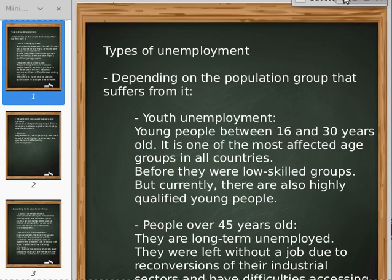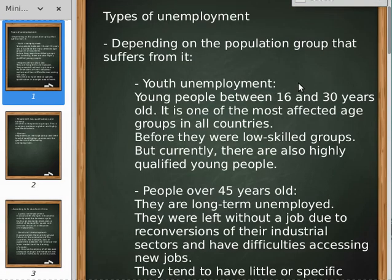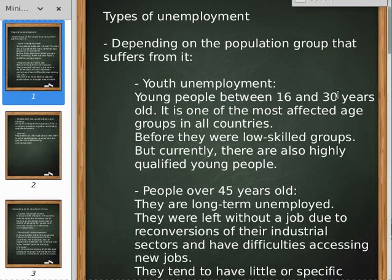There are two kinds to speak about unemployment. First of all, depending on the population group that suffers from it. For example, youth unemployment — we speak about young people between 16 and 30 years old. It is one of the most affected age groups in all countries of the world. Before they were low-skilled groups, but currently they are also early-qualified young people.